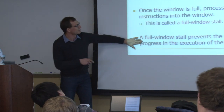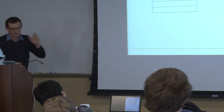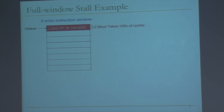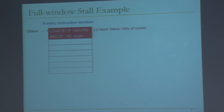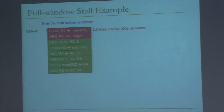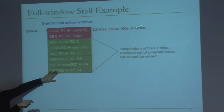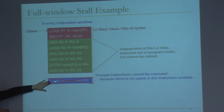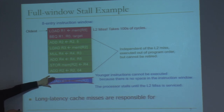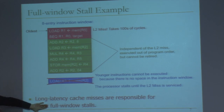A full window stall prevents the processor from making progress. Assume you have an eight-entry instruction window. You get a load instruction that gets an L2 miss and takes hundreds of cycles. A branch comes after that, you predict it, and you keep fetching independent instructions. You execute those instructions, but they cannot be retired because the load is still outstanding. The program counter reaches a new instruction, but you cannot execute it because you cannot place it into the instruction window — your reorder buffer is full. The processor stalls until the L2 miss is serviced.